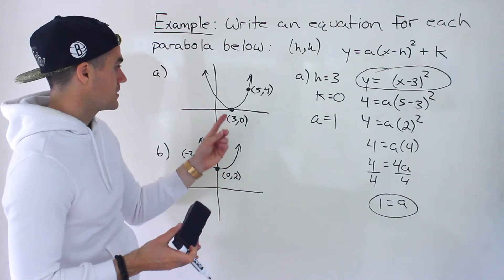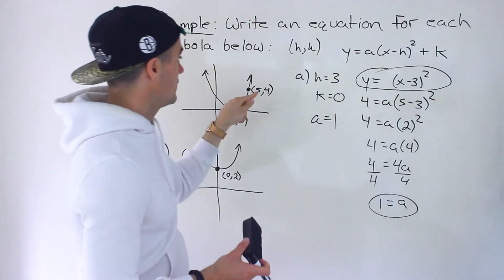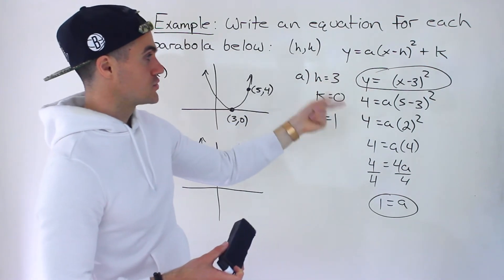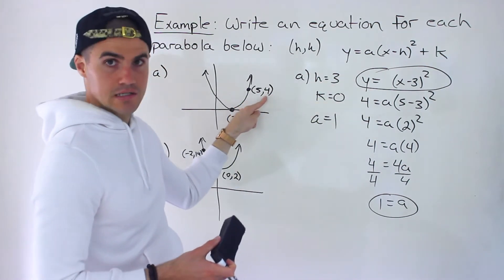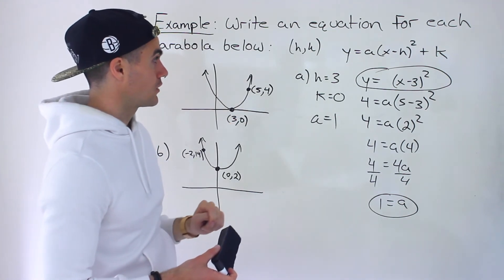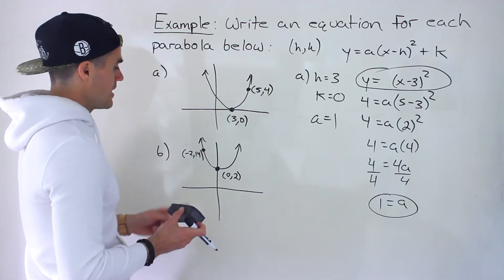And then if you have time, you could quickly check it. So 3 and 0, notice that that is the vertex of that. Then if we plug in 5 for X, 5 minus 3 is 2 to the power of 2. So it does indeed give us that Y value of 4. So that's how you could quickly check your answer. That is it for part A.